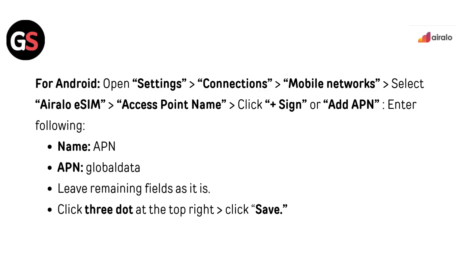Select Airalo eSIM access point name. Click on the plus sign or add APN. Enter the following — Name: APN, APN: globaldata. Leave the remaining fields as they are. Click the three dots at the top right and then click Save.